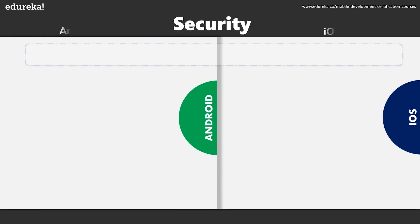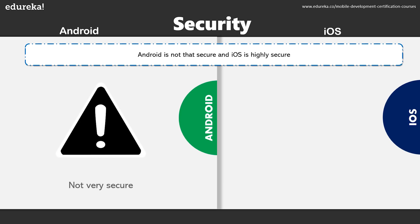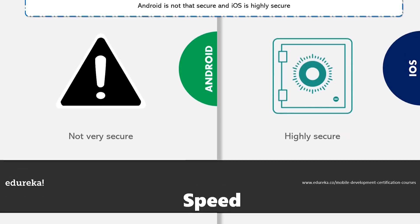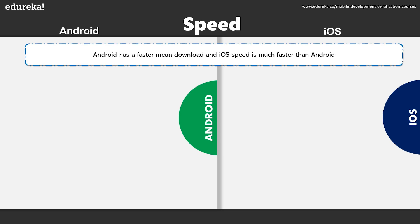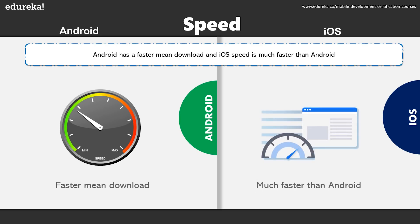Talking about security, Android is not very secure when compared to iOS, but iOS is highly secured. You're going to be paying so much, but it is worth spending money on something that keeps you secure. Talking about speed, Android has a faster mean download, but when you talk about iOS speed, it is much faster than Android overall.